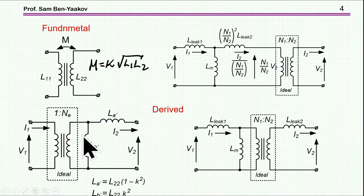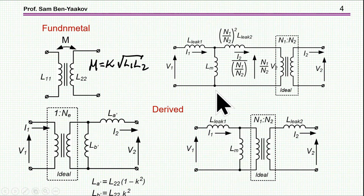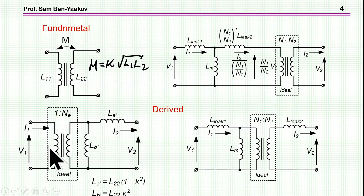Here we have a case in which the leakage of the transformer is placed on one side, with the magnetization inductance also on the same side. Here we have the leakage split between two sides, and here we have an entirely different configuration. All of these have the same terminal characteristics — meaning that the input-to-output transfer ratio of voltage and current, both forward and backward, are the same, and the impedances are the same.